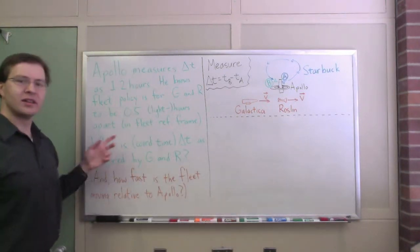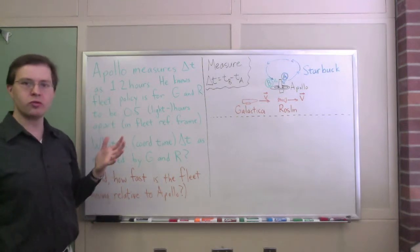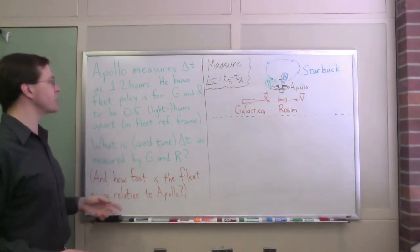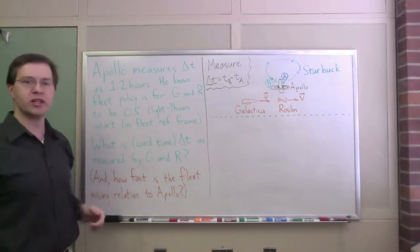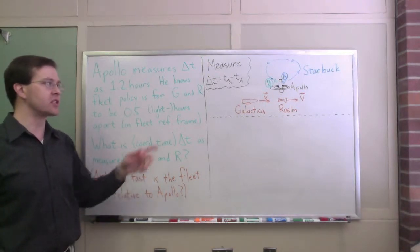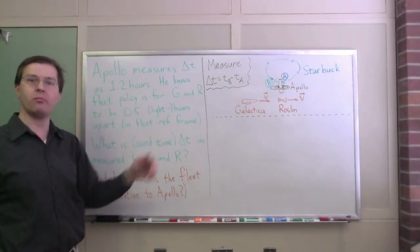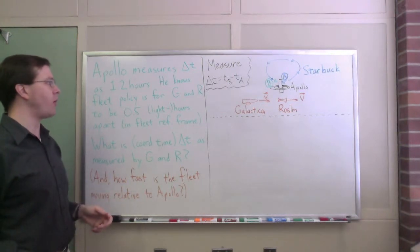Here's the question. Let's say that Apollo, in his own clock, measures a time delta t of 1.2 hours between Starbuck's departure and Starbuck's arrival back on the station. So delta t is 1.2 hours.